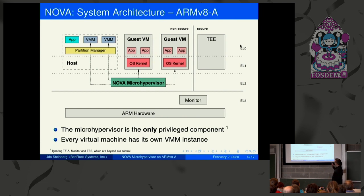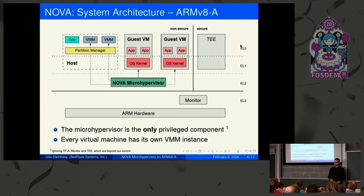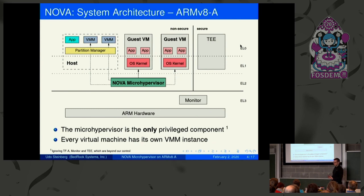But in the world that we own — the non-secure world upwards from EL2 — Nova is the only privileged component. All the other properties we had on x86, including a virtual machine monitor, pure guest VMs, and the deprivileged host environment, have all been carried forward to ARM.